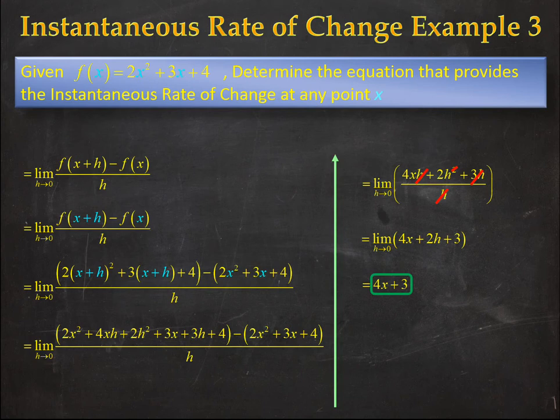The advantage of working through all this algebra to determine an expression in terms of x that gives us our instantaneous rate of change is that we can use this expression to tell us some cool stuff about the original function. Remember, the instantaneous rate of change gives us the slope of the tangent line to our original function at any point x. So we can determine when the slope is positive, which means the graph is going up, when the slope is zero, which means the graph is going horizontal, or when the slope is negative, when the graph is going down.